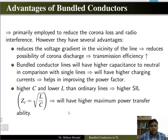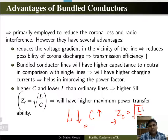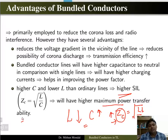We have reduced inductance and increased capacitance using bundle conductors. There is a term known as surge impedance, which is √(L/C). If we reduce L and increase C, the surge impedance of the line will decrease, meaning higher surge impedance loading — so the maximum power transfer capability of the line will increase.